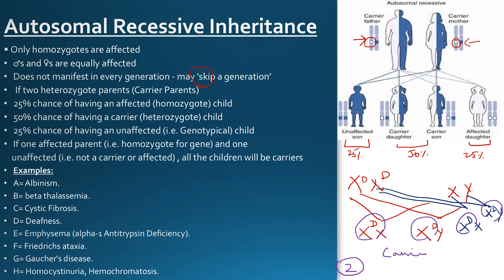Here are some examples of relatively common autosomal recessive diseases, written in a way to help you memorize them easily: A for albinism, B for beta thalassemia, C for cystic fibrosis, D for deafness, E for emphysema, and so on.